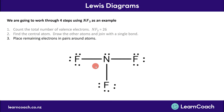After identifying the central atom, you need to place the remaining electrons onto the molecule in pairs, because electrons are always found in pairs. So we've put pairs around each atom. It's important when placing these pairs that none of the atoms in the molecule have more than eight electrons surrounding them.